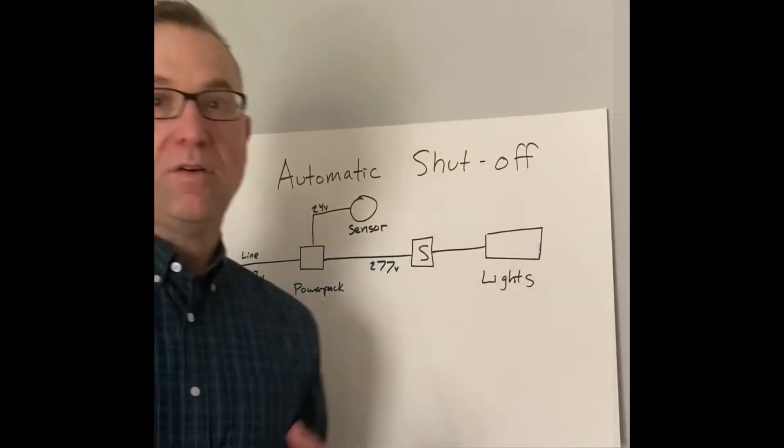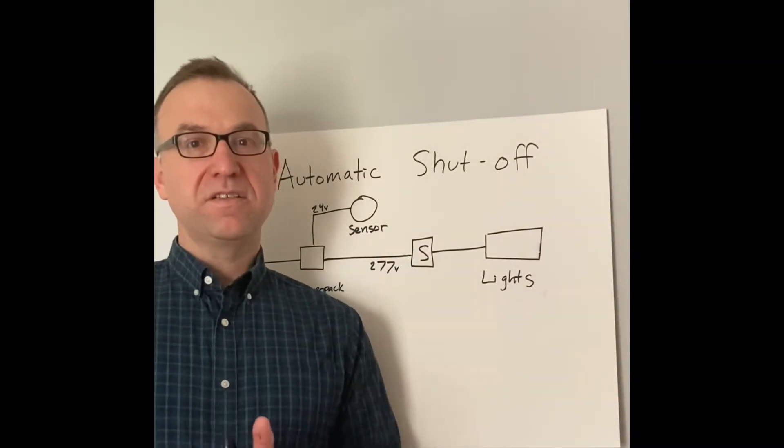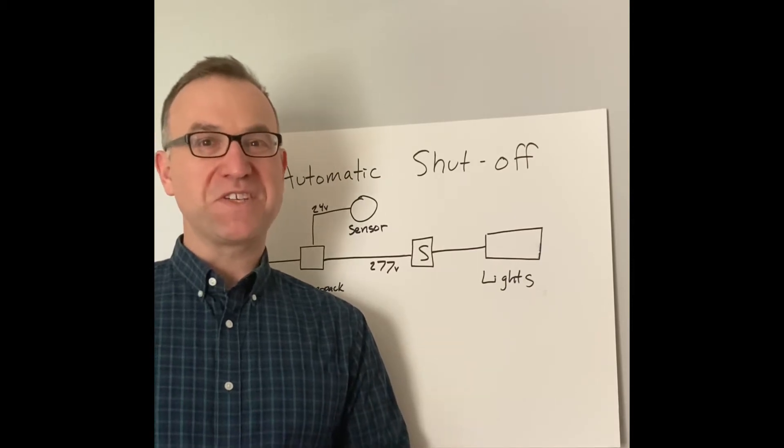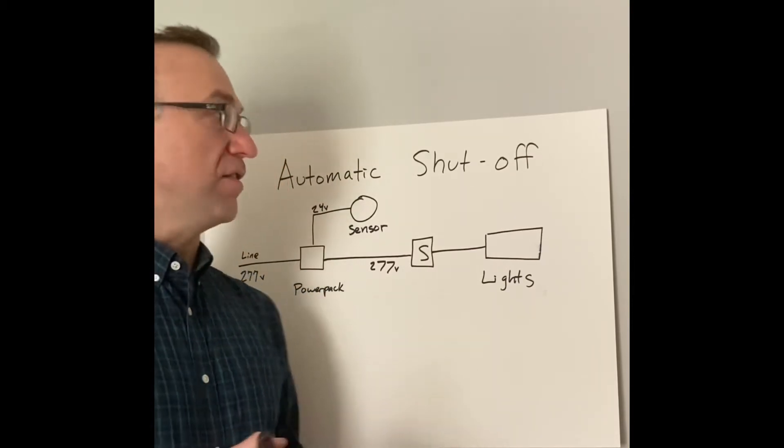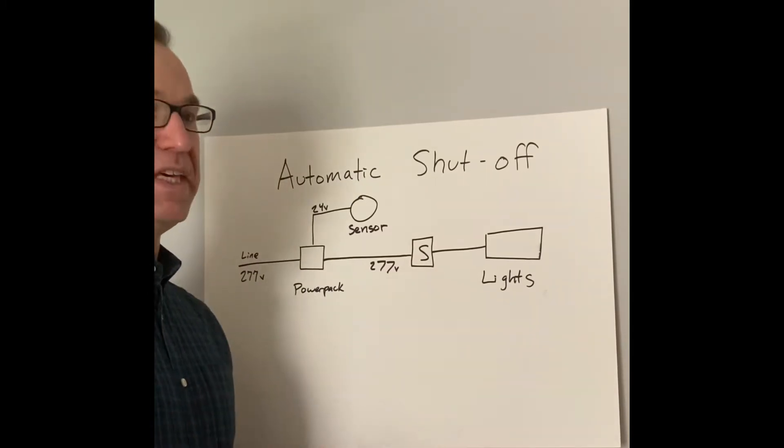One of the other questions that we get sometimes is relating to automatic shut off. So let me go over that because that's different than vacancy sensing. All right, so automatic shut off. I've been in the lighting control industry for 10 years. Saw this in place a few years ago to turn lights off, but I'm going to show you the way it works and you'll see why it does not meet that vacancy setting.